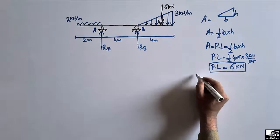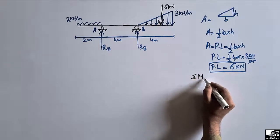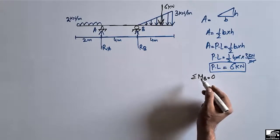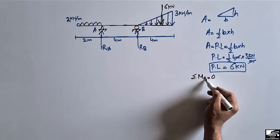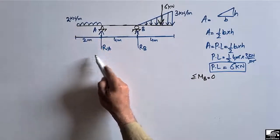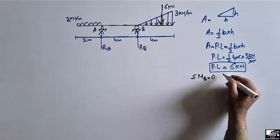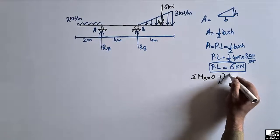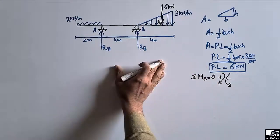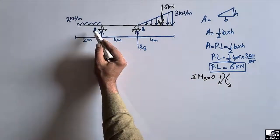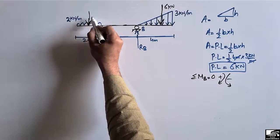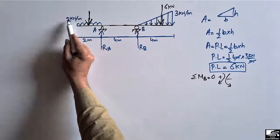To find the support reactions, we apply the equilibrium equation: summation of moments at point B equals zero. Clockwise moments are taken as positive and anti-clockwise moments as negative — this is the sign convention for this beam.